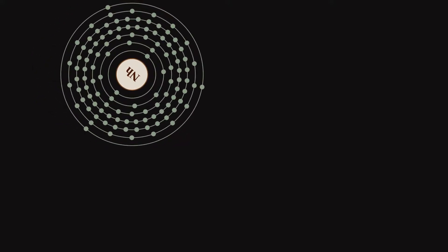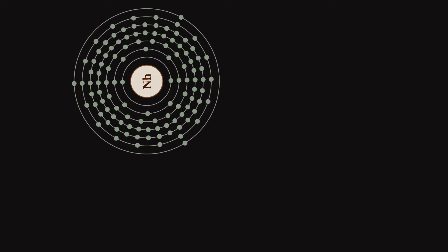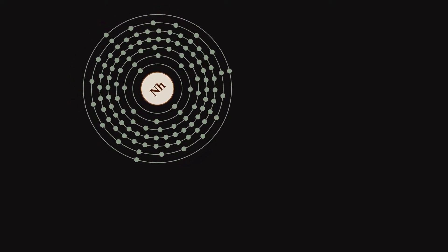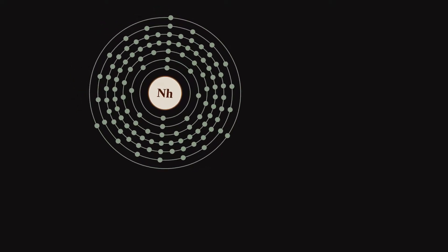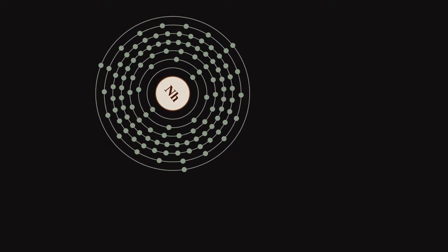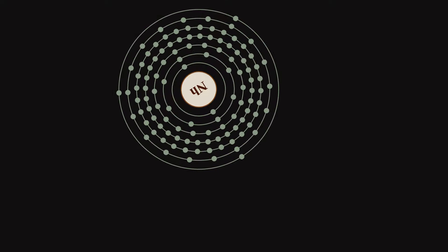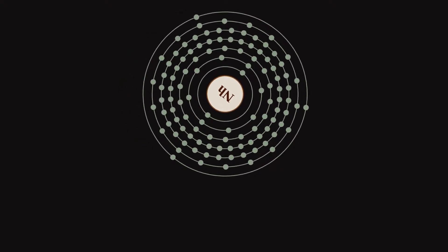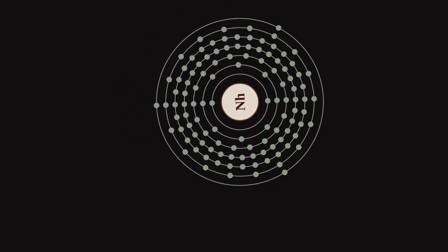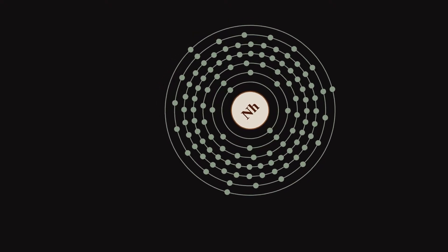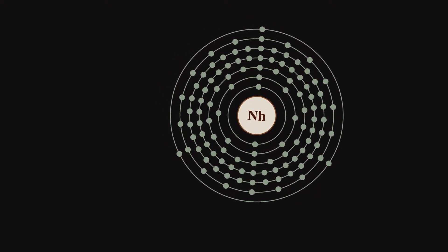In 2015, the IUPAC and IUPAP joint working party recognized the element and assigned the priority of the discovery and naming rights for the element to Riken, as it judged that they had demonstrated that they had observed element 113 before the Joint Institute for Nuclear Research team did so.